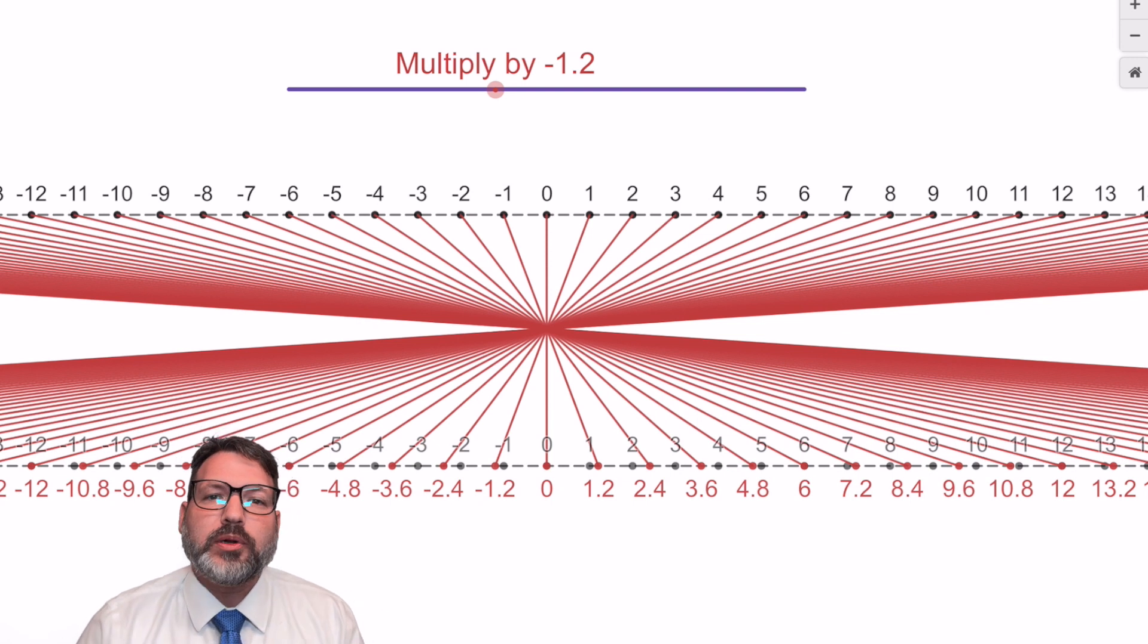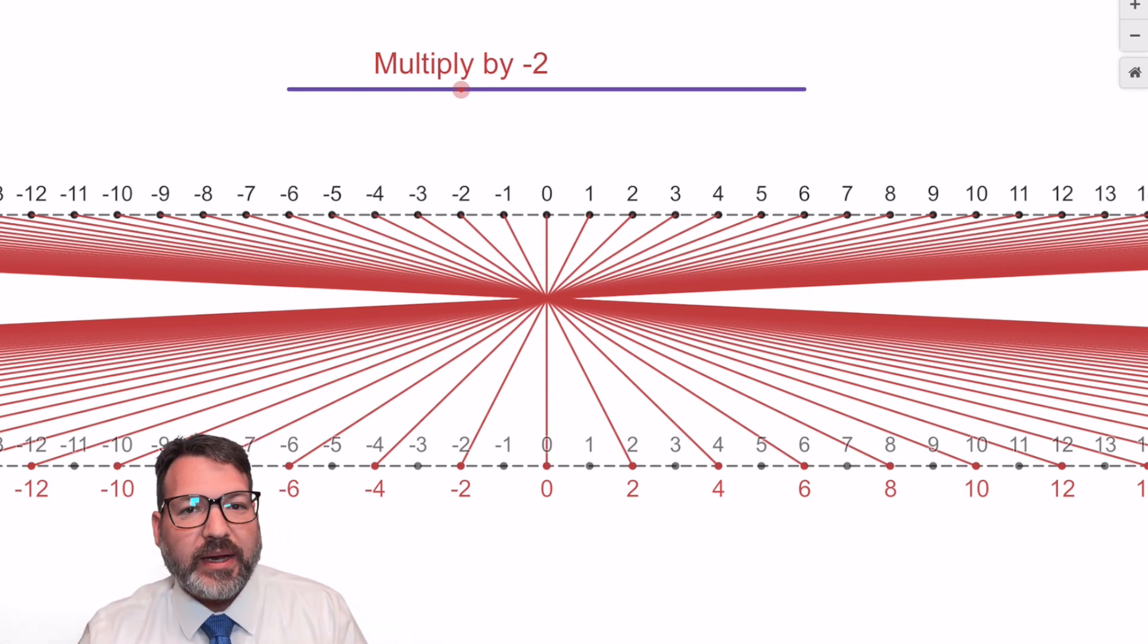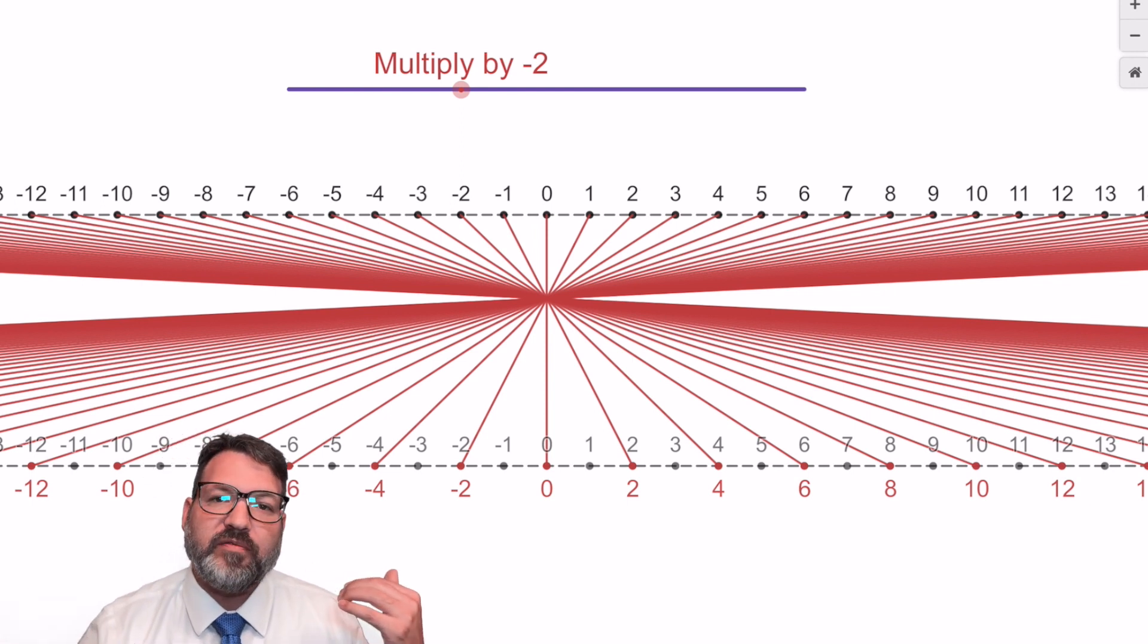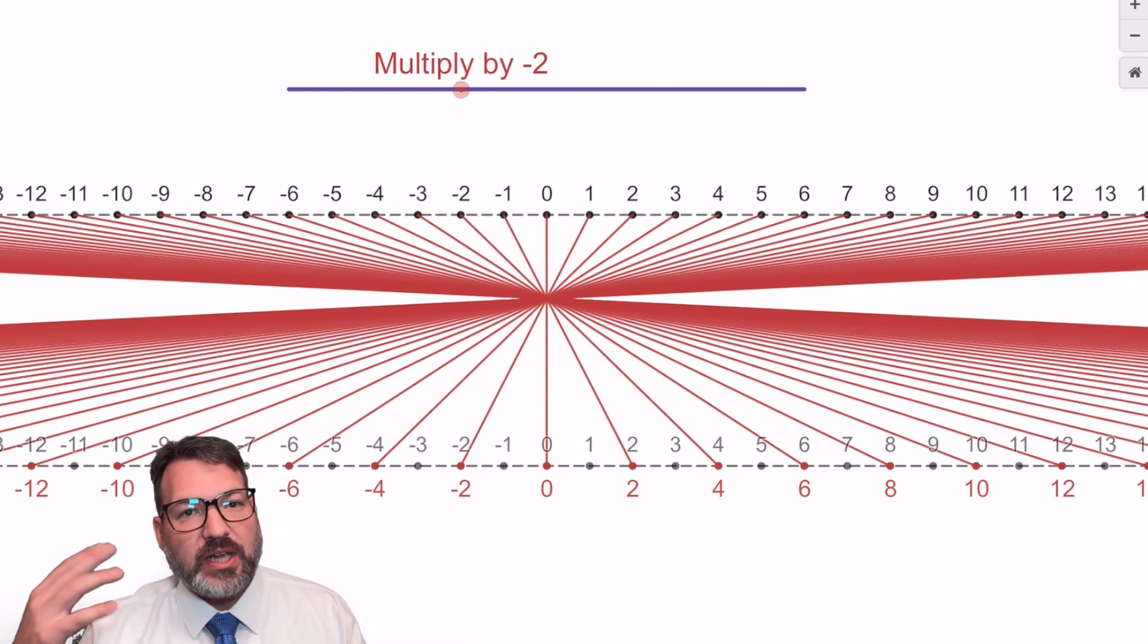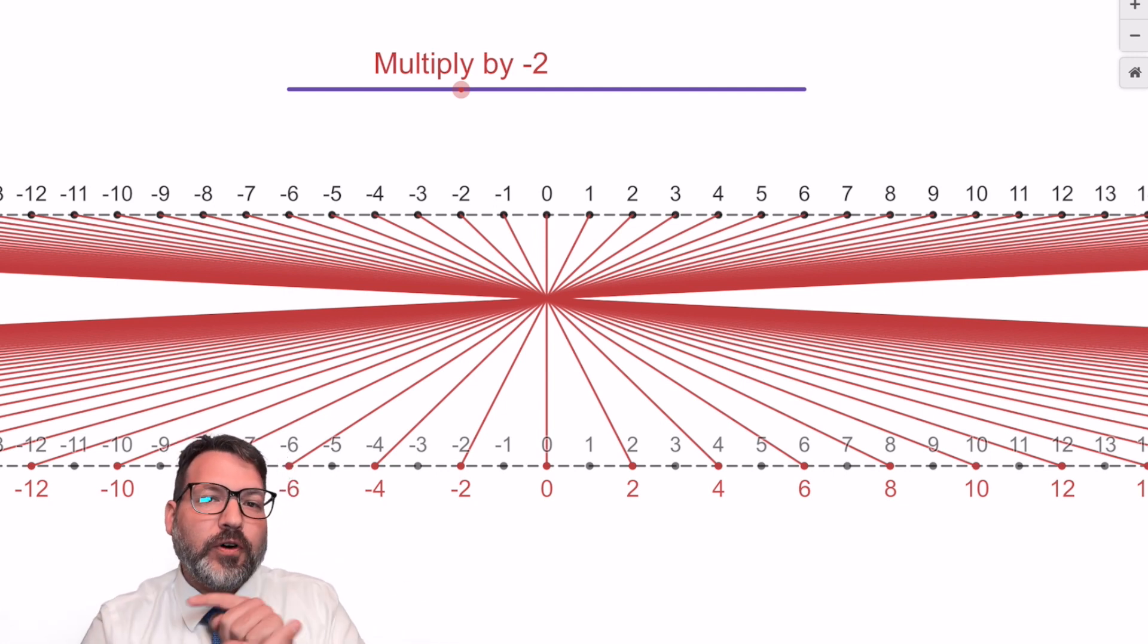What's happening when we multiply by a negative scalar, something like, say, negative 2, is on the one hand, we are scaling that bottom number line out by a factor of 2. Something of magnitude 1 now maps onto something of magnitude 2. Something of size 4 now maps onto something of size 8. But the negative on that scalar is also telling us you need to reverse the entire number line. You need to flip that number line around.